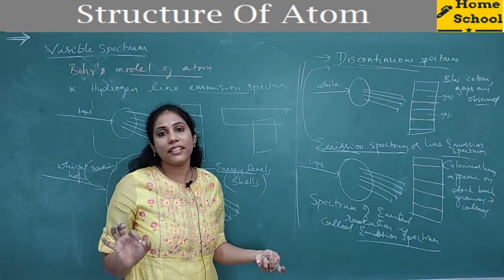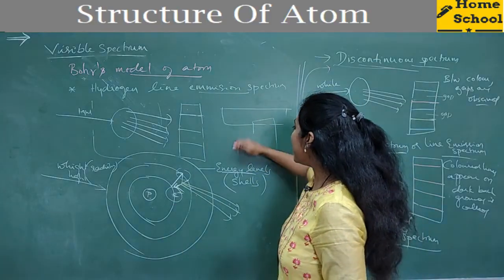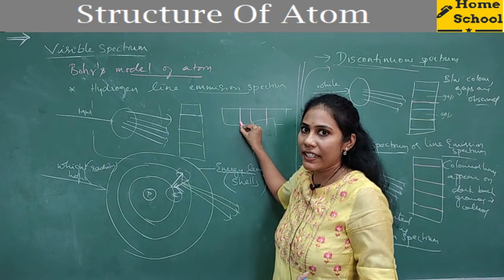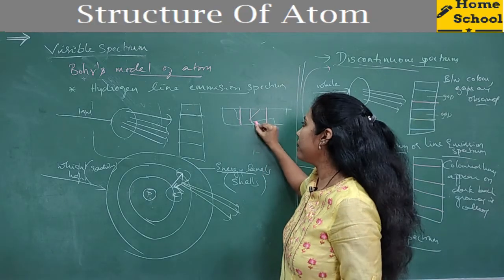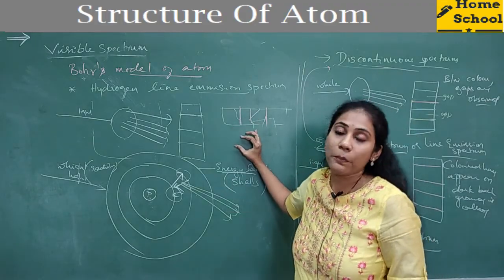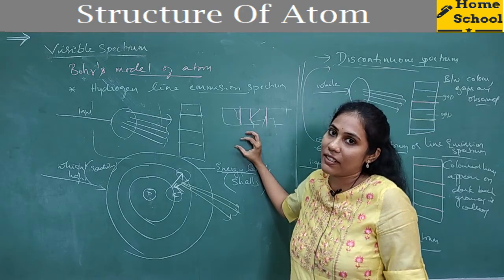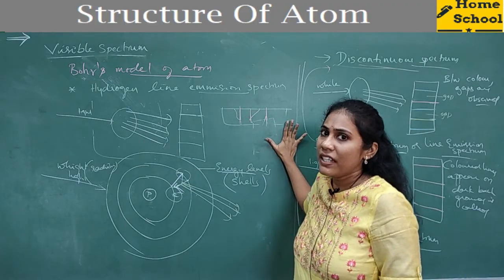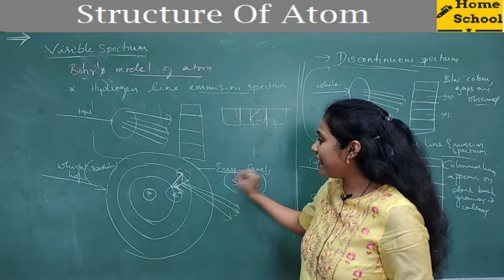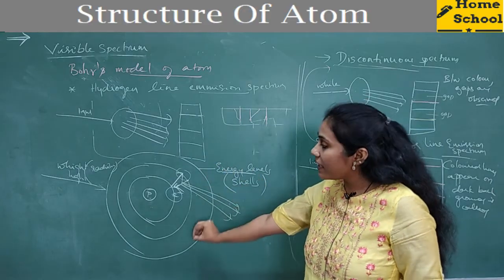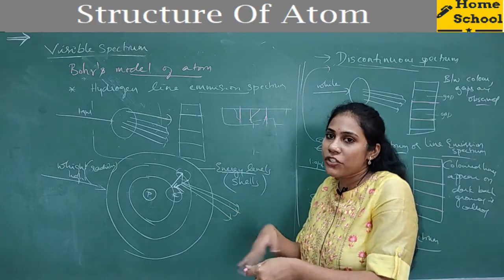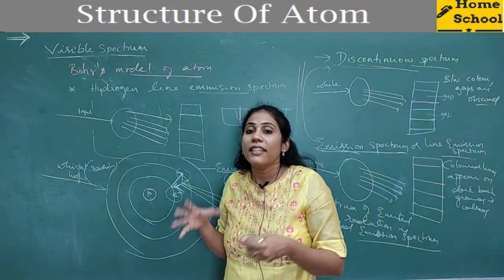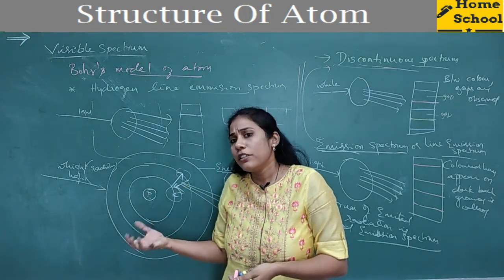However, there is a major limitation of Bohr's theory. When observing the line spectrum of some atoms, each and every line has further split into more lines, and Bohr could not explain this splitting properly. Because of this limitation, we are going to study the next theory — the quantum mechanical theory — which explains atomic structure in more detail. We will do this in the next video.